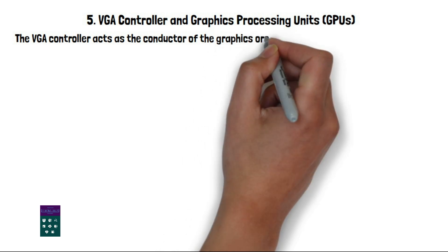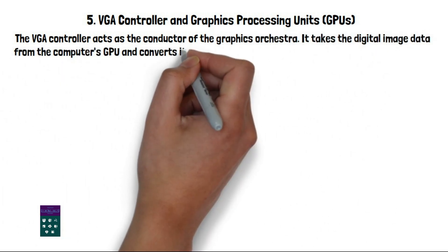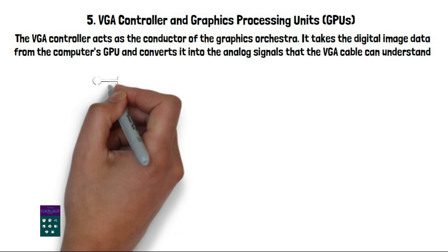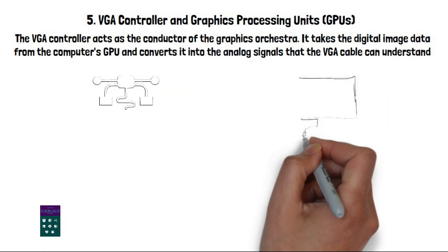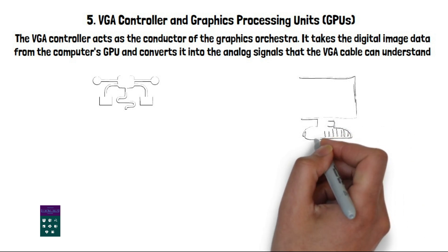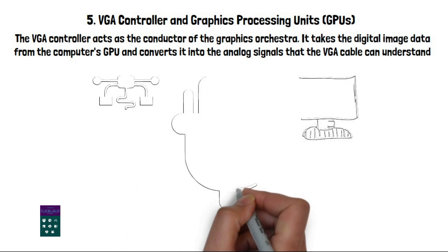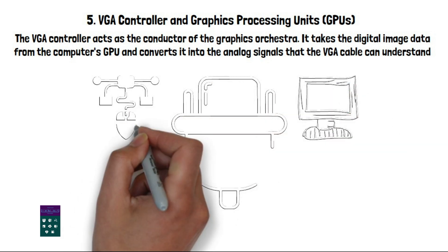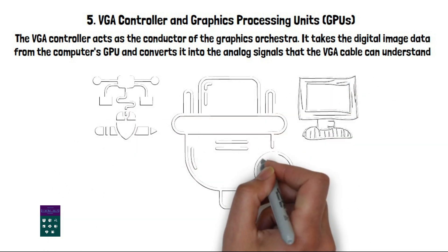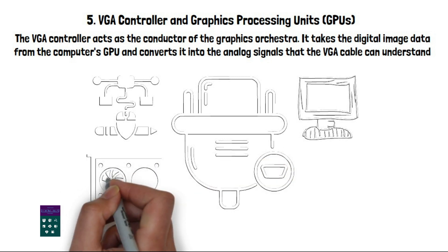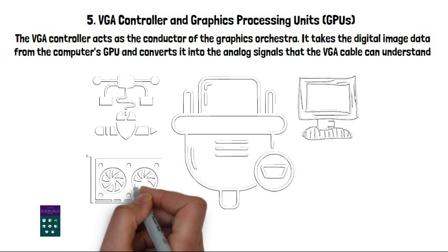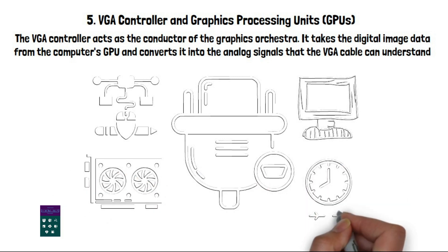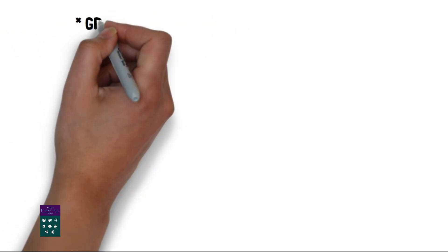The VGA controller acts as the conductor of the graphics orchestra. It takes the digital image data from the computer's GPU and converts it into the analog signals that the VGA cable can understand. The controller ensures that the timing, synchronization, and pixel data are all in sync, allowing for a seamless display on your monitor. Think of the VGA controller as the maestro, waving its baton to create a beautifully synchronized symphony of pixels. Without it, the graphics would simply be a jumbled mess of pixels desperately trying to find their place.